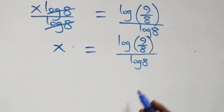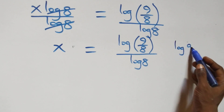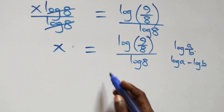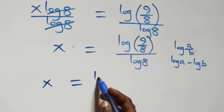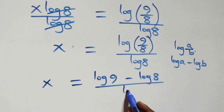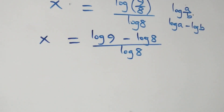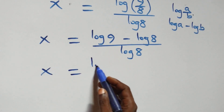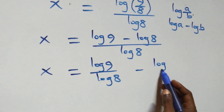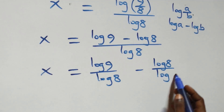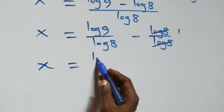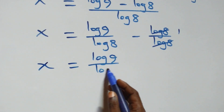This follows the log rule: when we have log of a over b, it is the same thing as log a minus log b. So what we have here becomes x equals log 9 minus log 8, all divided by log 8. We separate this into two fractions: x equals log 9 over log 8 minus log 8 over log 8, giving us x equals log 9 over log 8 minus 1.